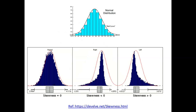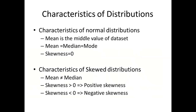Skewness can also be shown using box plots. For a perfect normal distribution with zero skewness, the Q2 mark would be in the center of the box. With negative skewness, Q2 moves more towards Q3 or the maximum value. With positive skewness, Q2 moves more towards Q1 or the minimum value of the data set.